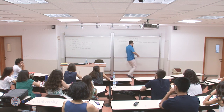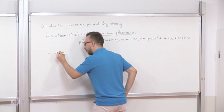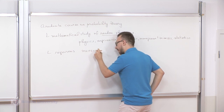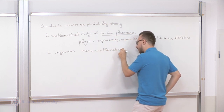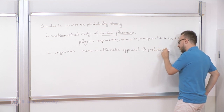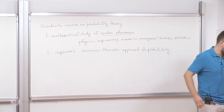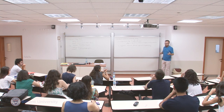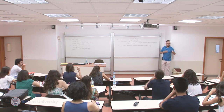In this course, we will follow the rigorous approach based on measure theory. There is also the less rigorous approach based on calculus — this is what you did mostly in your undergraduate course. You calculated things like expectations, variances, covariances, distribution functions, et cetera.